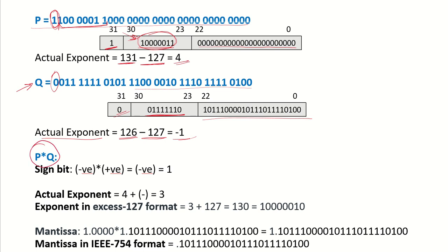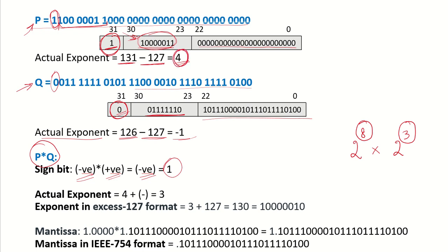What will be the product P into Q? P is negative and Q is positive, so their product is negative, represented by sign bit 1. When multiplying two numbers, we add the exponents — just as 2 to the power of 8 times 2 to the power of 3 requires adding exponents. The exponent of P is 4 and the exponent of Q is minus 1, so 4 plus minus 1 equals 3. To represent this in IEEE 754, we add 127, giving us 130, which in binary is 10000010.